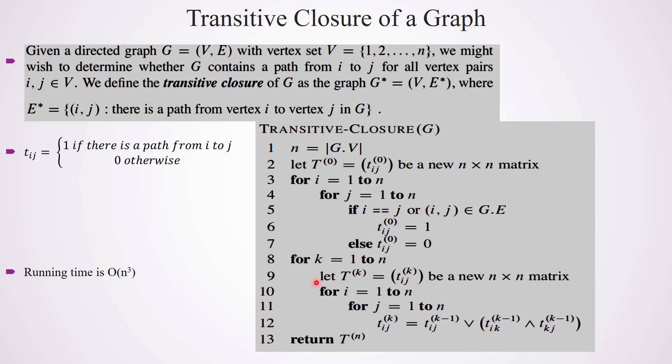After that we have 3 nested for loops. If you notice these loops, this is very similar to what we have studied in the Floyd-Warshall algorithm. The algorithm to find the transitive closure of a graph is actually a modification of the Floyd-Warshall algorithm to find all-pairs shortest path. The same logic is applied here. We consider each vertex one by one. First we consider vertex 1, and for every pair of vertices we check whether there is a path through vertex 1. After that we include vertex 2 and test whether we can find a path from vertex i to j via vertex 2.